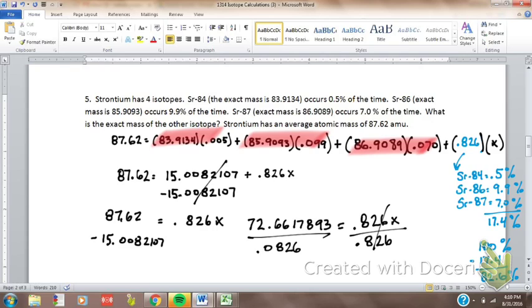And so the mass, the exact mass of this unknown isotope will be 87.968.